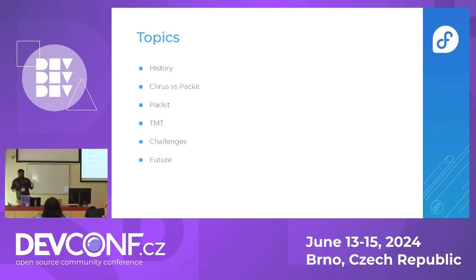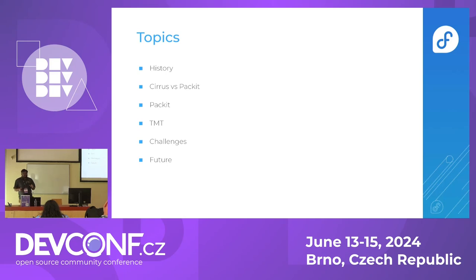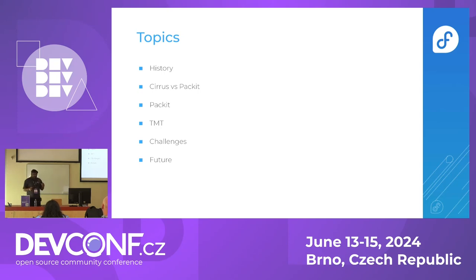So a brief history of how it all started. In the container tools team, especially with Podman, we were using Cirrus — it's a third-party CI system. It's great at some things, but it lacks a lot of features we want, especially with automation in downstream building and testing. We're going to talk about how Cirrus is different from Packit, what Packit actually is, how we're using TMT, the challenges we're facing, and the future.